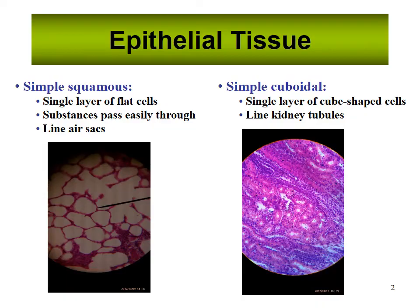We'll start with epithelial tissue. Your body is made up of four different types of tissue: epithelial tissue, connective tissue, muscular tissue, and nervous tissue. Epithelial and connective tissue are the main ones we'll look at here. Epithelial tissue always has a free surface — part of the tissue that's open to an empty area. Inside the body, that empty area, like in the air sacs called alveoli, is where gas exchange happens in the respiratory system.